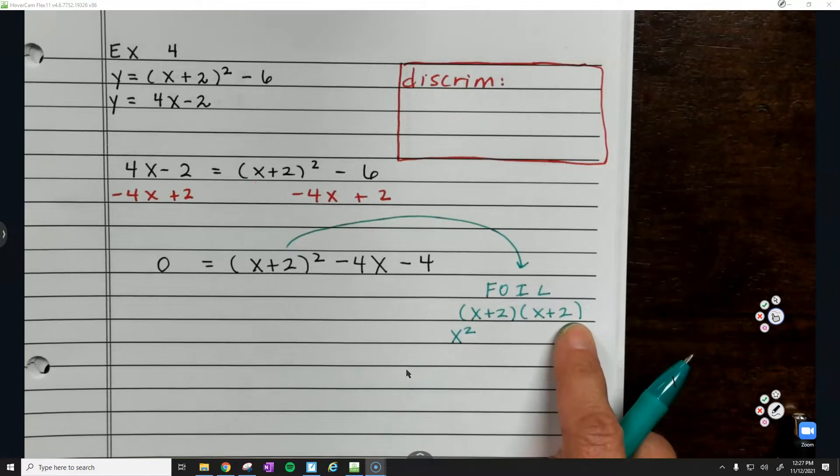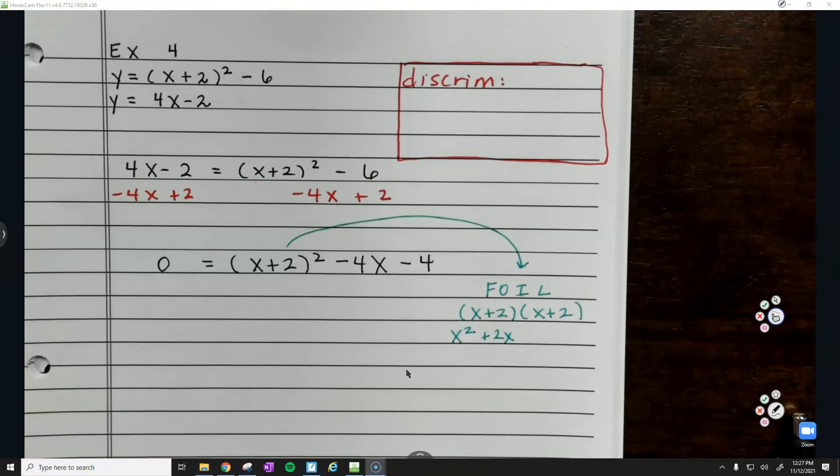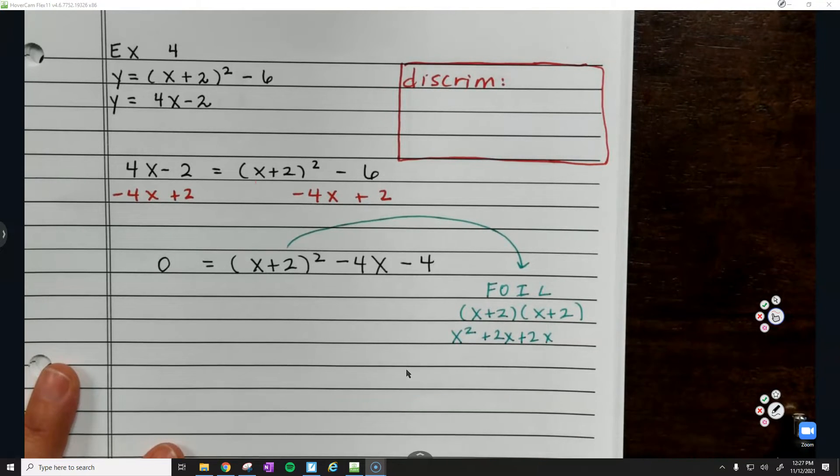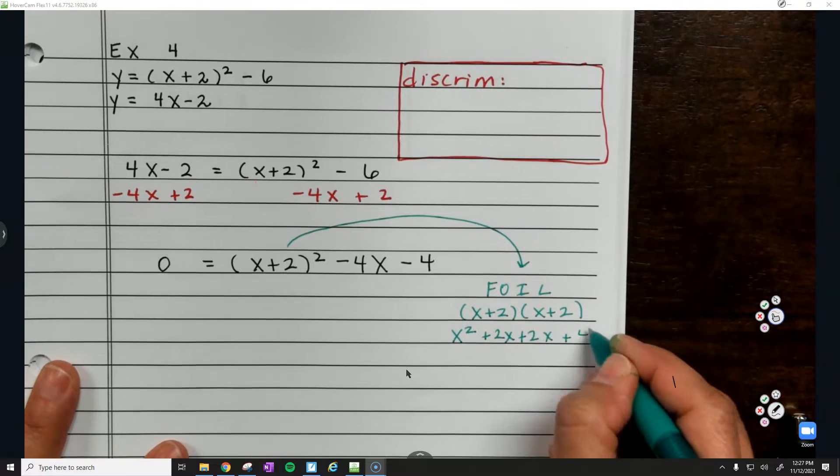What's the two outside terms? 2 and x? 2x. The two inside terms, 2 and x. 2x. It's always going to be like that for these problems. The inside and the outside are going to match. Your last term is 4.